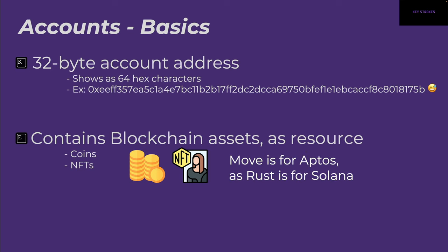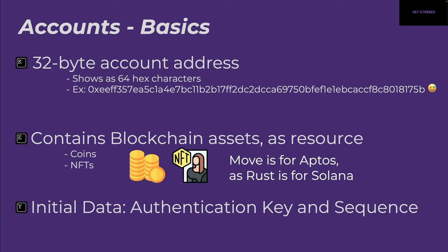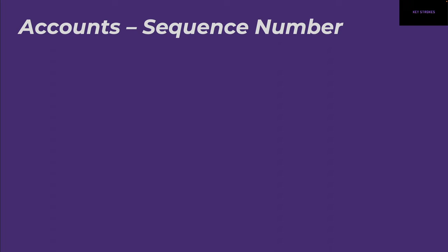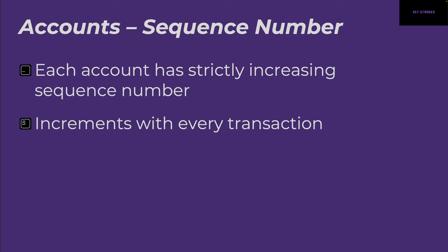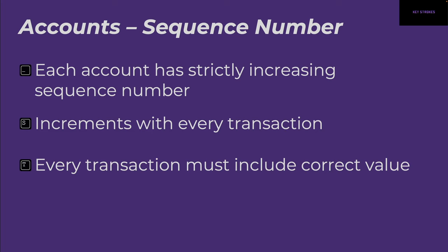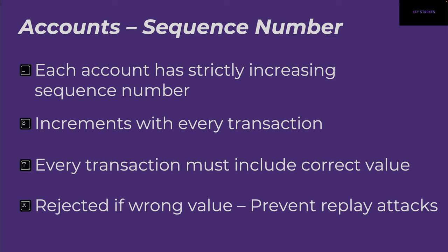Whenever you create any new account, the initial data it stores is an authentication key and a sequence number. Each account comes with a sequence number, and it's strictly increasing — it just keeps going up and cannot go down. Every time a transaction happens on the account it has to be incremented, and every transaction has to include the correct value of the sequence number, otherwise the whole transaction will just be rejected.